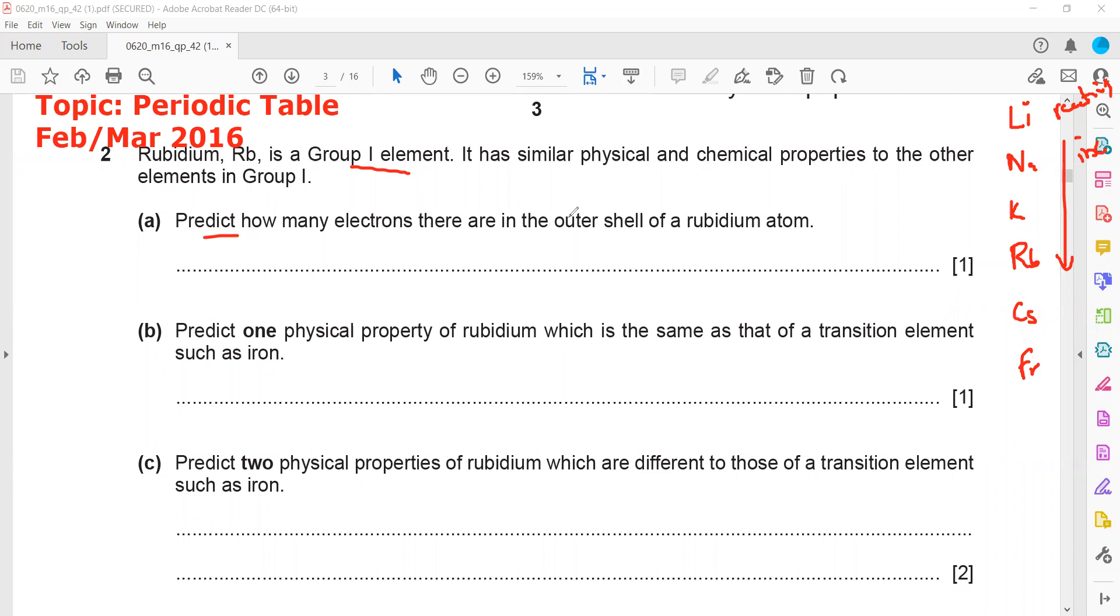So predict how many electrons are there in the outer shell of a rubidium atom. The group numbers are actually representing the number of electrons in the outer shell. So how many electrons should be there for rubidium as it belongs to group 1? That is 1. Because the group number shows the number of electrons in the last shell.